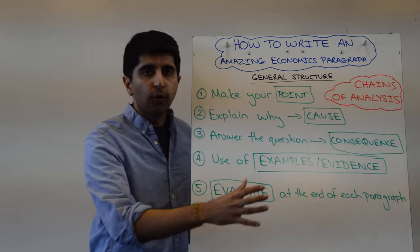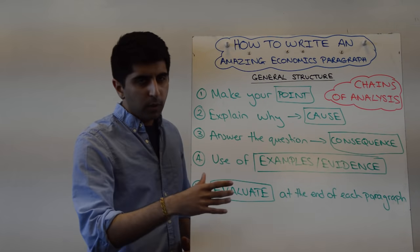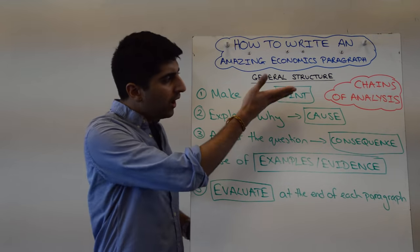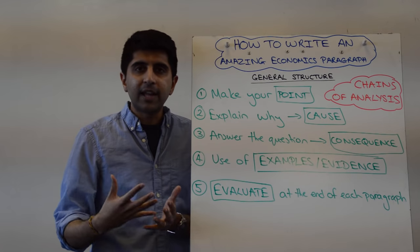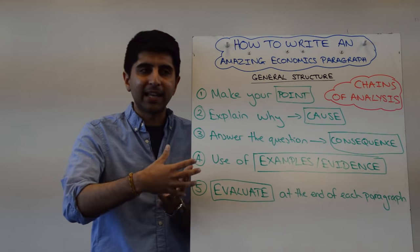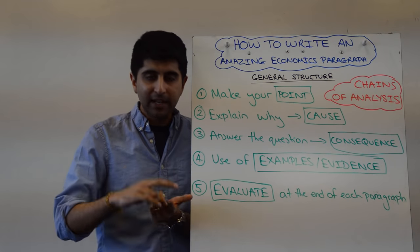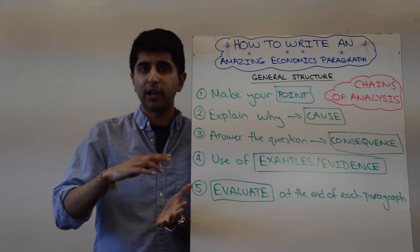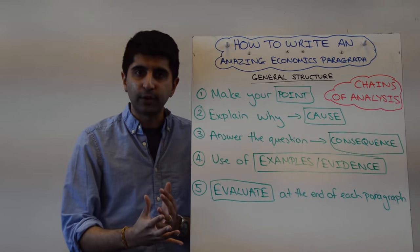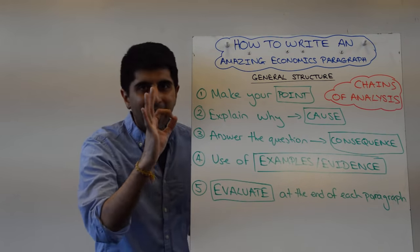But once you've done your point and then your cause, you need to focus on a consequence. Here's where you really answer the question. The question is about, on this side of the question anyway, about benefits of economic growth to an economy. So why is a fiscal dividend for the government actually a benefit? In your consequence, you say, well as a consequence of the government gaining extra revenues, they can then spend it on key things in the economy, like infrastructure, like public goods, like healthcare, education, like welfare. All these very important expenditures can then be financed. That's where you focus your attention. And you do all of that, your point, cause and consequence, with chains of analysis.